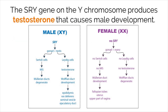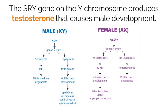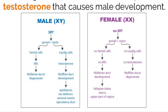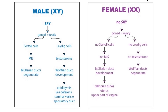Hormones are the key players that help the body maintain homeostasis, but that's not all they do. A few hormones also help regulate sex determination. On every male Y chromosome, there is a gene called the SRY gene. This codes for the production of a protein called the testis determining factor, or TDF. During development, this signals the male reproductive organs to be created, ultimately making the sex of the baby a male.